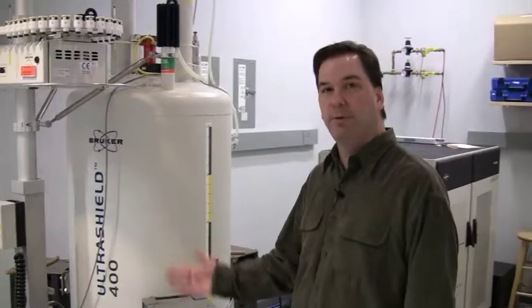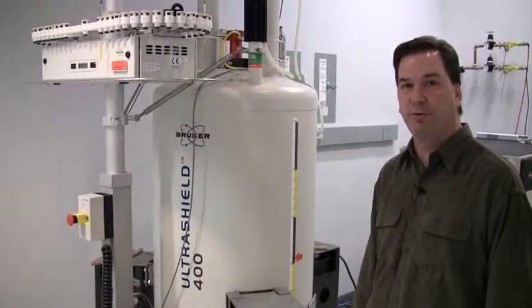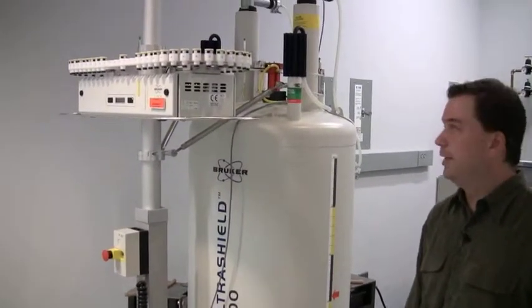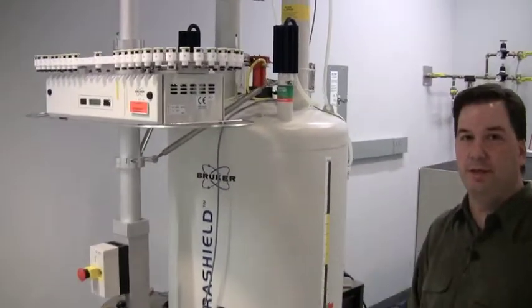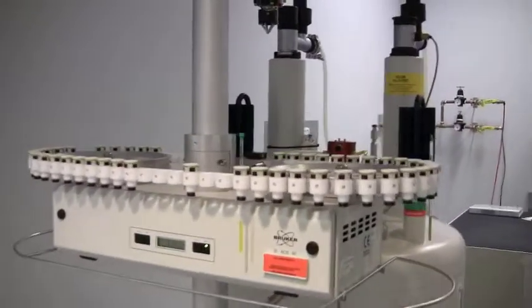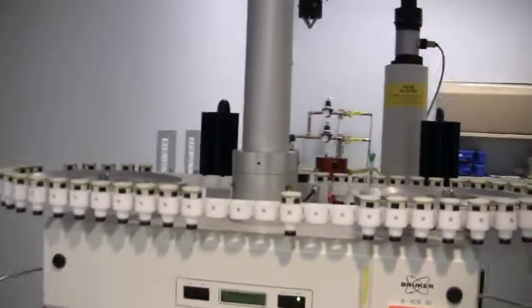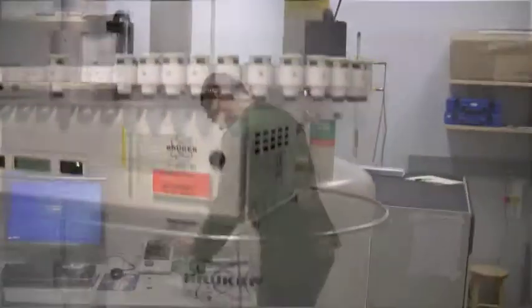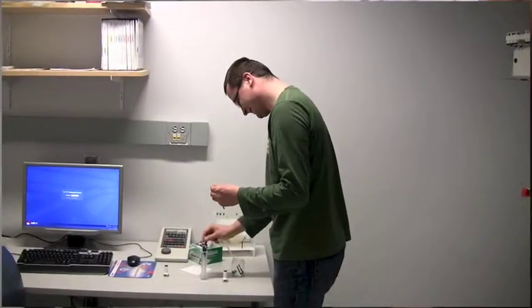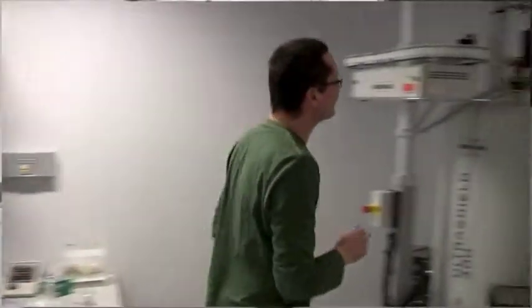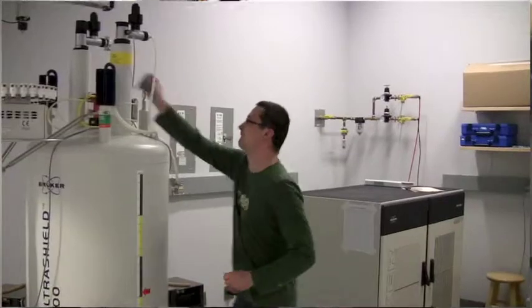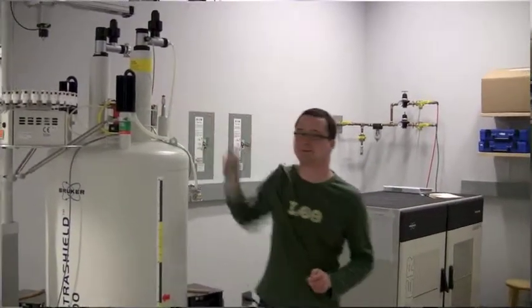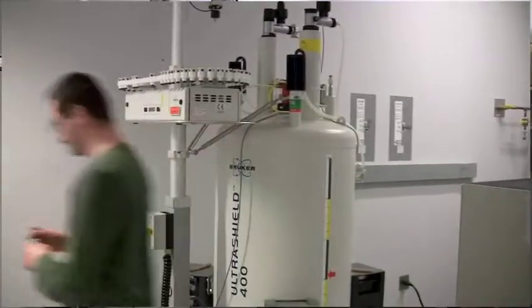This is a 400 megahertz Bruker spectrometer. As you can see, it also has the BAC-60 sample changer on it. The sample changer once again comes on at 4 o'clock every afternoon, and it offers our users the ability to just put samples on the changer, enter some data into the software, and have the instrument automatically record their NMR spectra.